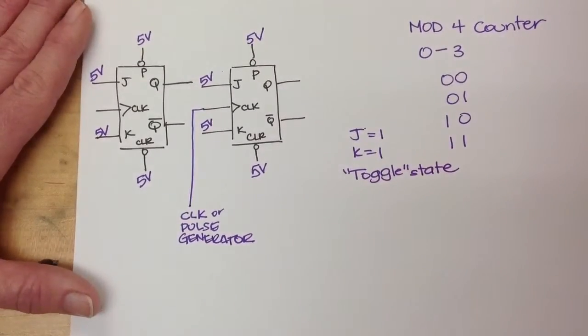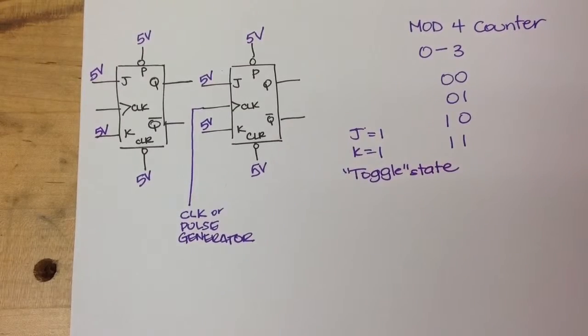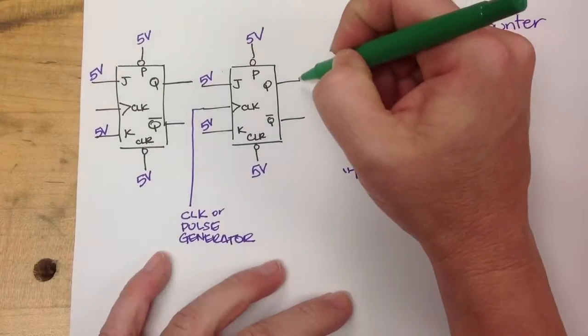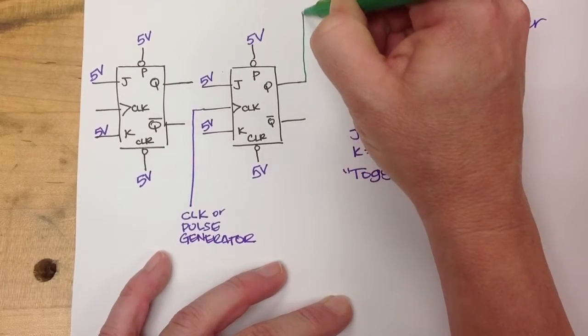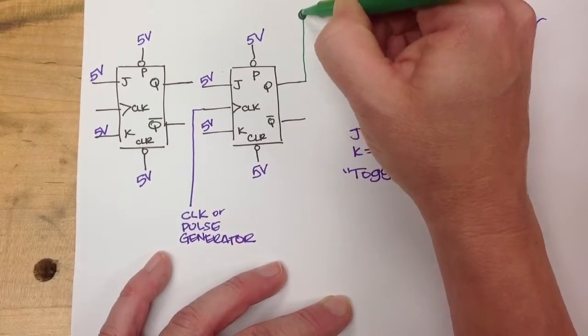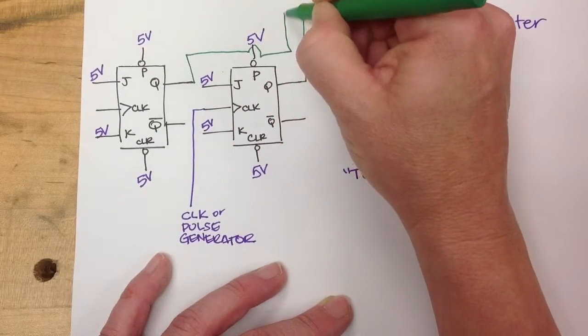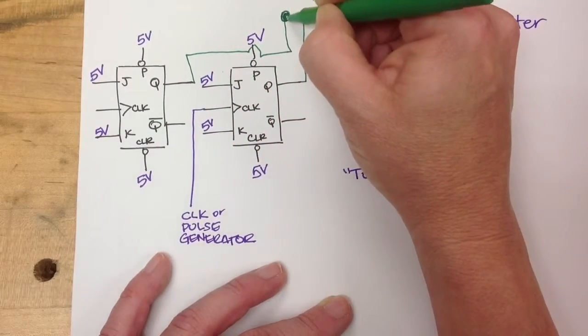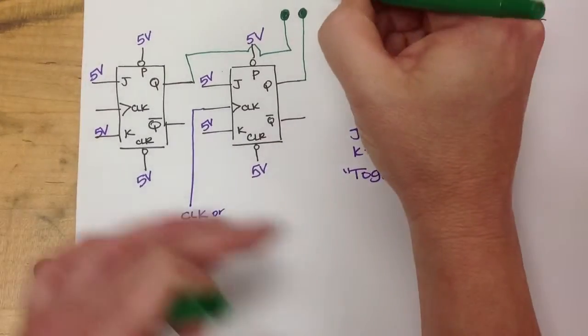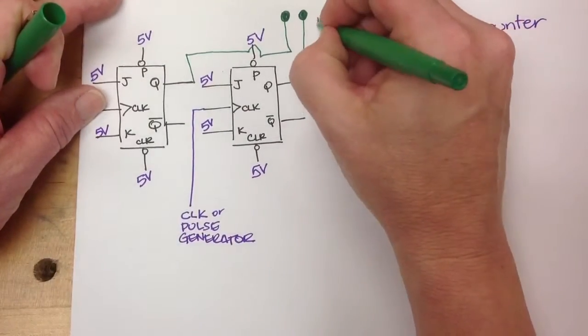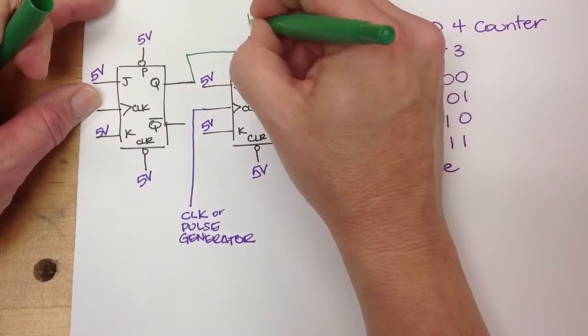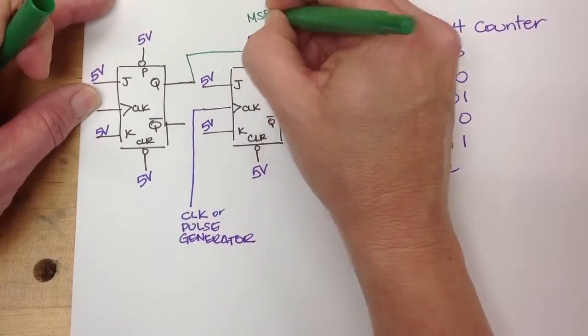Now when we're doing that, then our output is going to be our Q's, and they're going to go to LEDs, like this, here, and here. And this would be our least significant bit, and this would be our most significant bit.